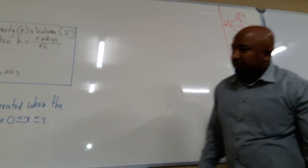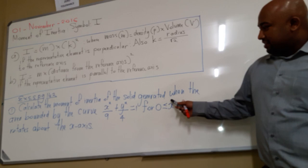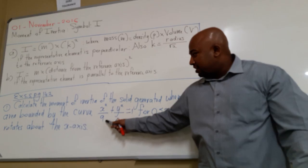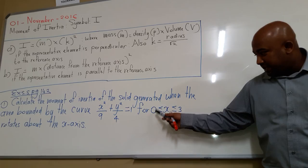The question is: calculate the moment of inertia of the solid generated when the area bounded by the curve x squared over 9 plus y squared over 4 is equal to 1, in the domain 0 to 3, rotates about the x-axis.